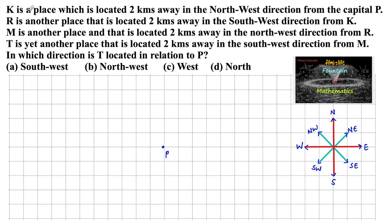K is located two kilometers away in the northwest direction from P. Northwest is in this direction, so we can mark two units in the northwest direction and mark this position as K.